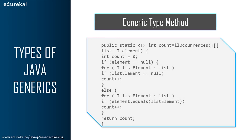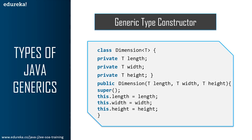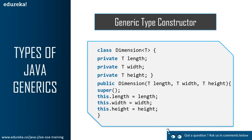The same analogy applies for constructors as well. A constructor is a block of code that initializes a newly created object. It resembles an instance method in Java but has no return type, and it has the same name as the class. In this example, the dimension class constructor has type information — you can have an instance of dimension with all attributes of a single type only. The class dimension is of type T with three variables: length, width, and height. In the constructor, using the this reference: this.length = length, this.width = width, this.height = height. You cannot have different types for these parameters.